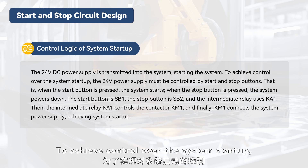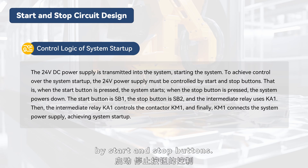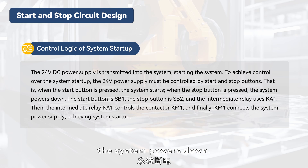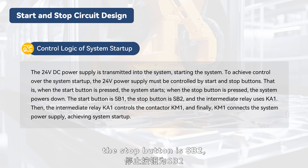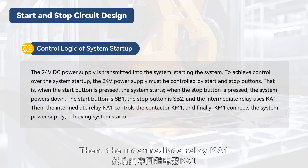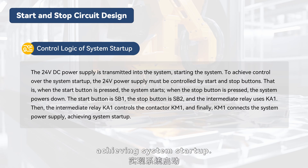To achieve control over the system startup, the 24 volts power supply must be controlled by start and stop buttons. When the start button is pressed, the system starts. When the stop button is pressed, the system powers down. The start button is SB1, the stop button is SB2, and the intermediate relay uses KA1. The intermediate relay KA1 controls the contactor KM1, and finally KM1 connects the system power supply, achieving system startup.